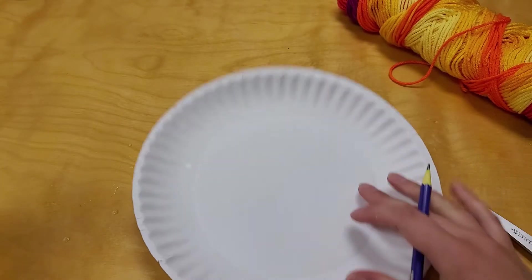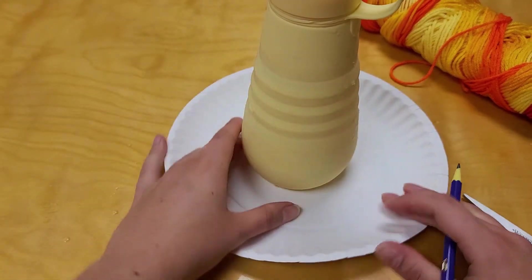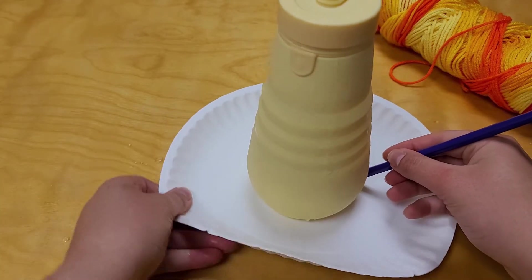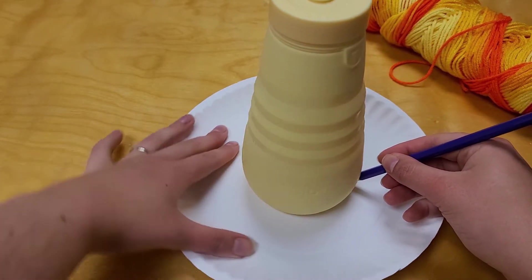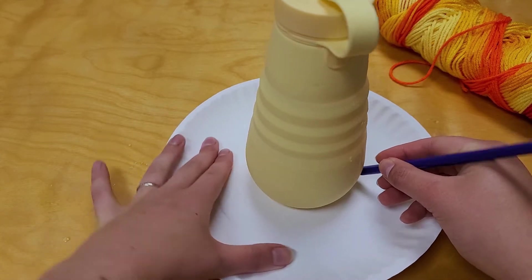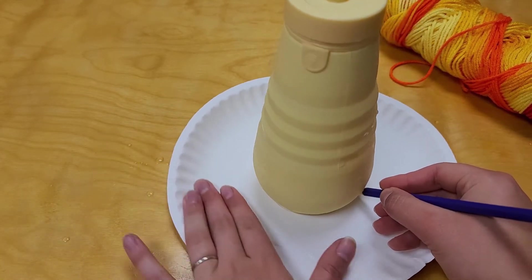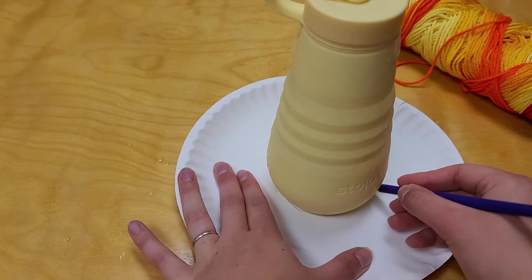The hardest part of this craft is actually formulating what size you want to make your basket. What I do is take my circular object and trace it around the bottom so I can have a perfect circle, and that's going to be the base of your basket.